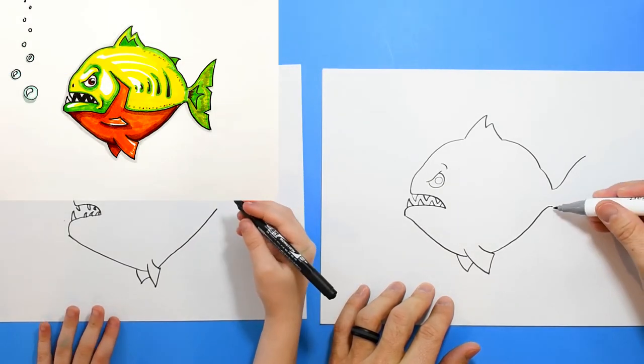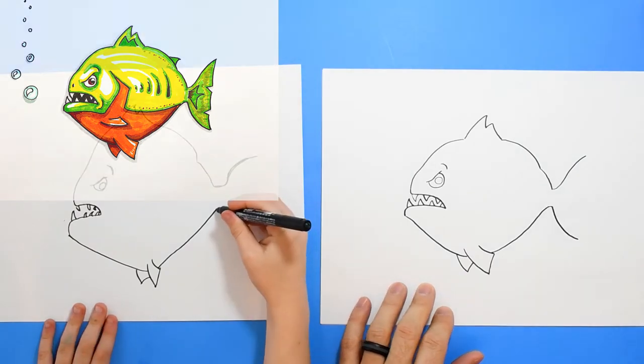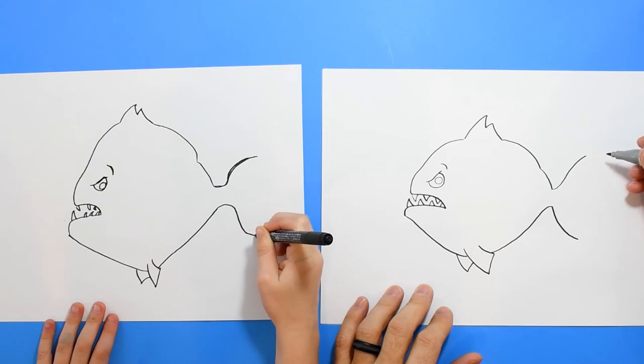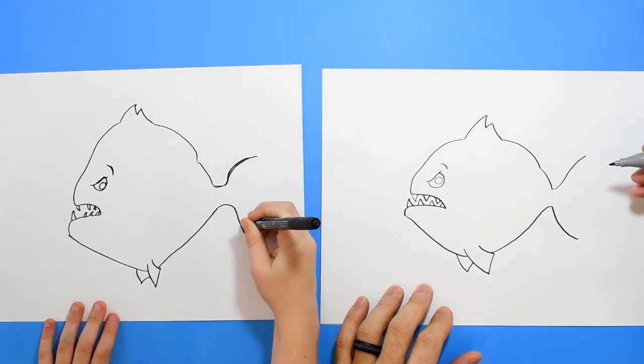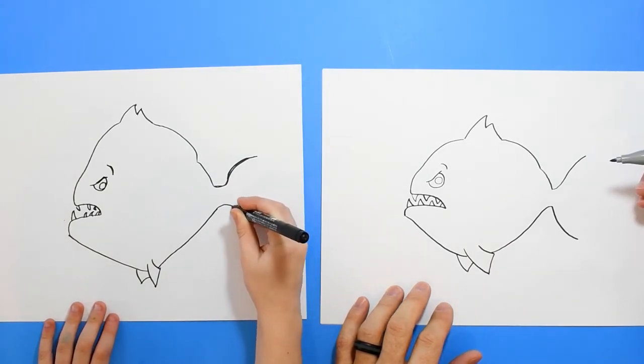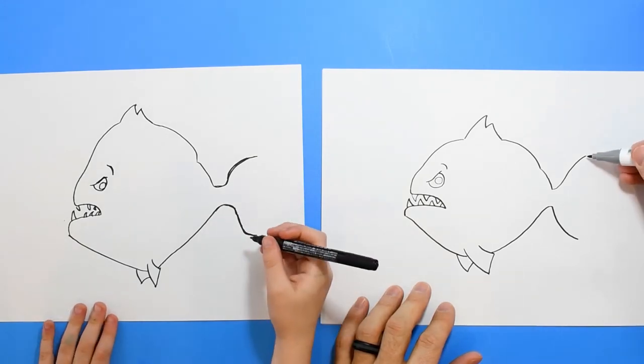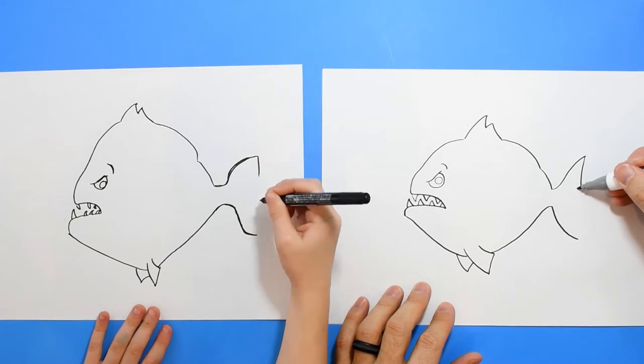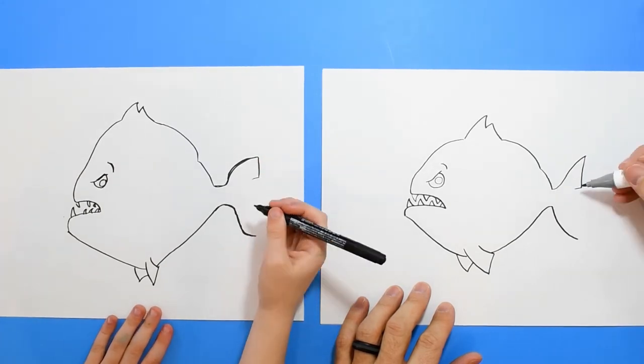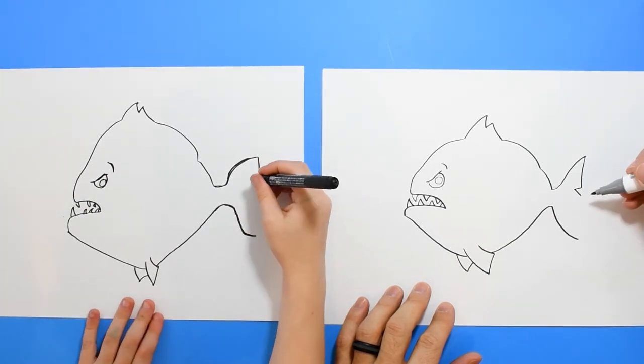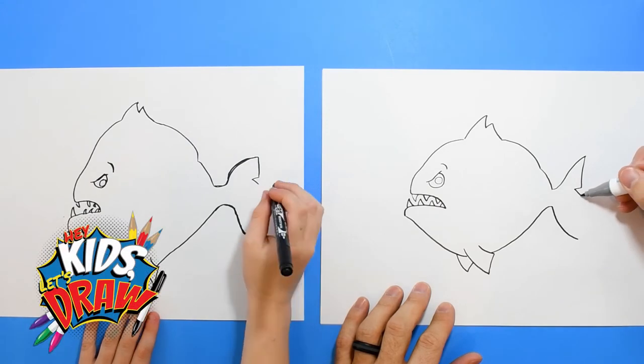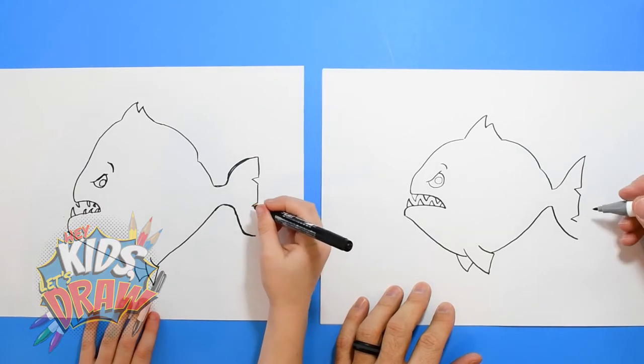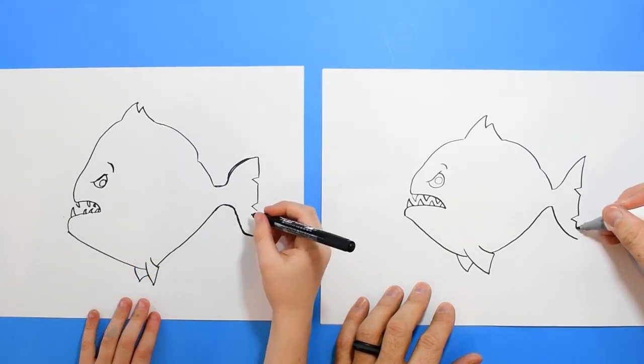Here's the bottom tail. Okay. We're going to go down, in, out. We're going to make this a jaggedy tail. Down, in, out. And then we're going to kind of curve it to connect.